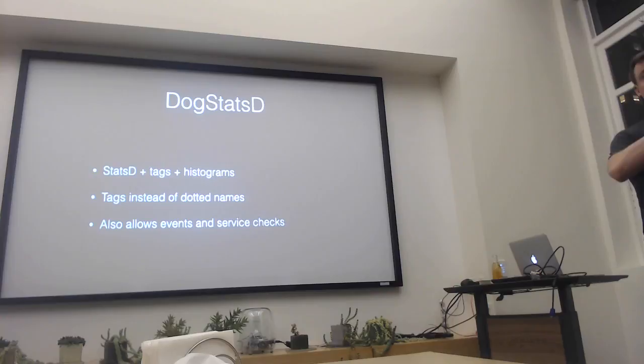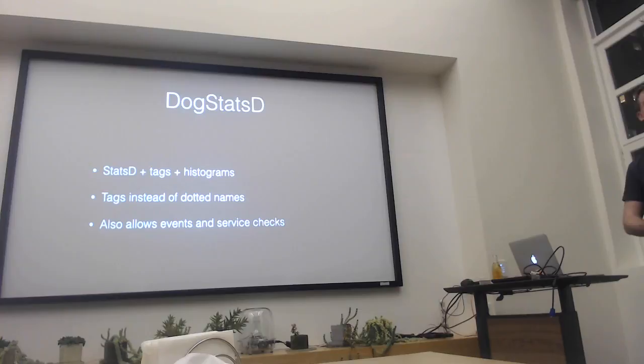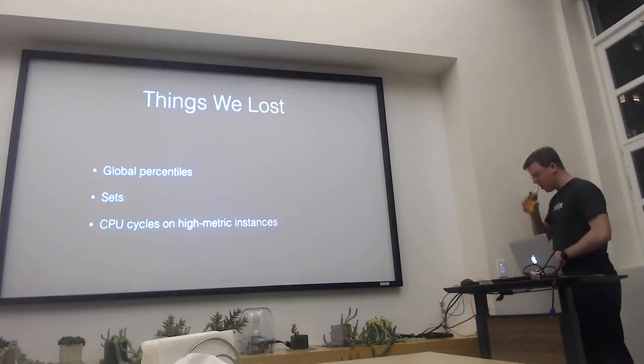DogStatsD also has some other primitives. If you've ever used the event stuff in Grafana to overlay your deploys as part of your charts, that's an event — something that's supported by DogStatsD and flows into Datadog. There are also service checks, which are sort of like the output of a Nagios check — OK, not OK, stuff like that. You can send all that along to Datadog as well.